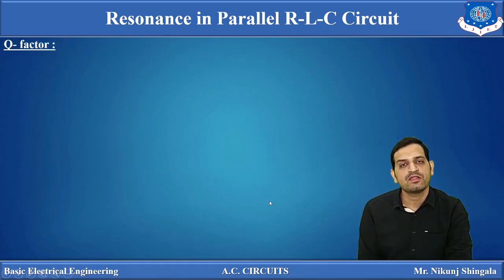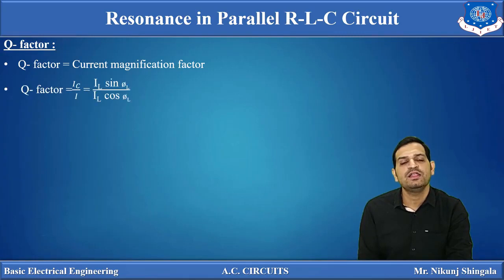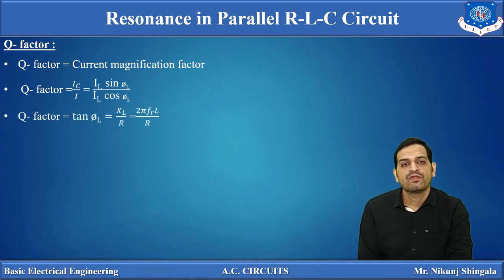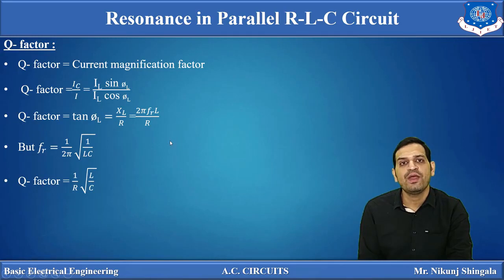Now, quality factor. We have already discussed Q factor in the previous video lecture. Q factor is the efficiency of the inductor and capacitor to store energy. Here, Q factor is the current magnification factor — in the previous case of series resonance, it was a voltage magnification factor. So Q factor can be written as IC / I or IL / I. Putting the values — IC = IL sin φL and I = IL cos φL — Q factor = tan φL = XL / R = 2πFRL / R. Substituting FR = 1/(2π√(LC)), we get Q = (1/R)√(L/C), which is the same expression as for the series RLC circuit.